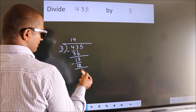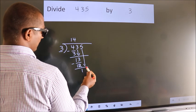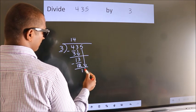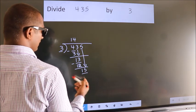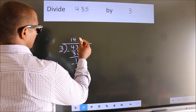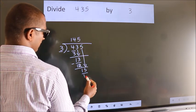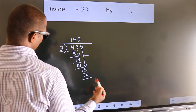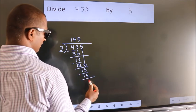After this, bring down the next number. So 5 down, so 15. When do we get 15 in the 3 table? 3 times 5 is 15. Now we subtract. We get 0.